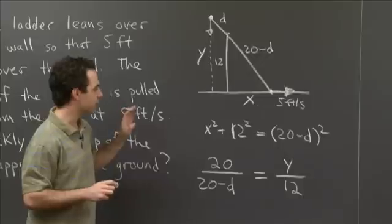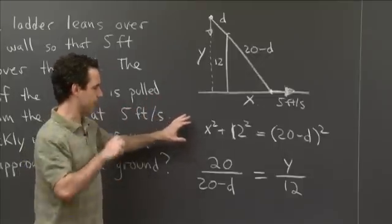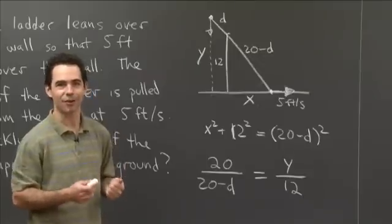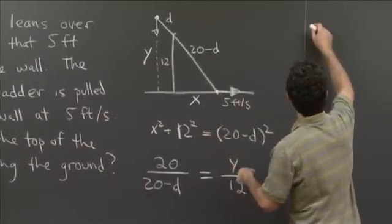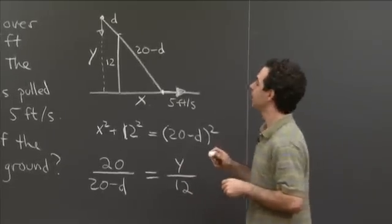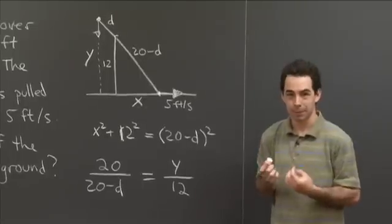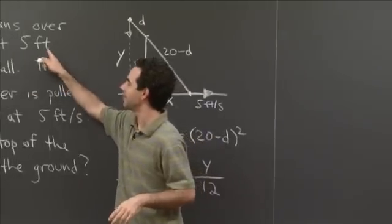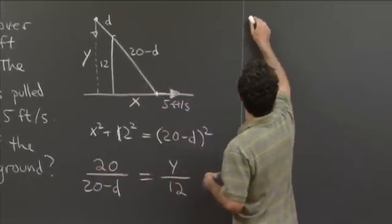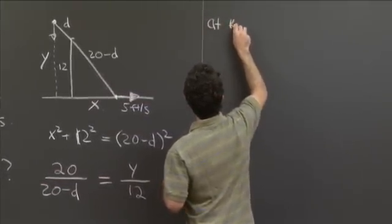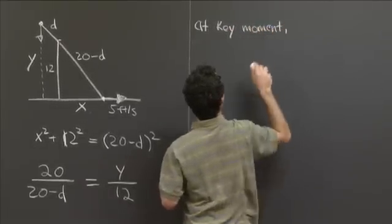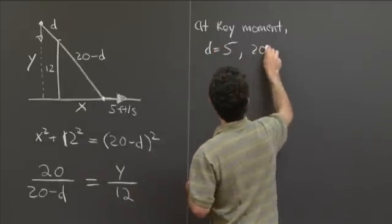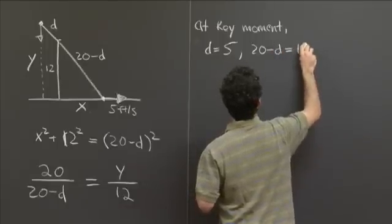We have the Pythagorean theorem and similar triangles — those are the relationships we need. Now we need the condition at our particular moment in time. Five feet of the ladder projects over the wall, so at the key moment, d = 5. That means 20 − d = 15.